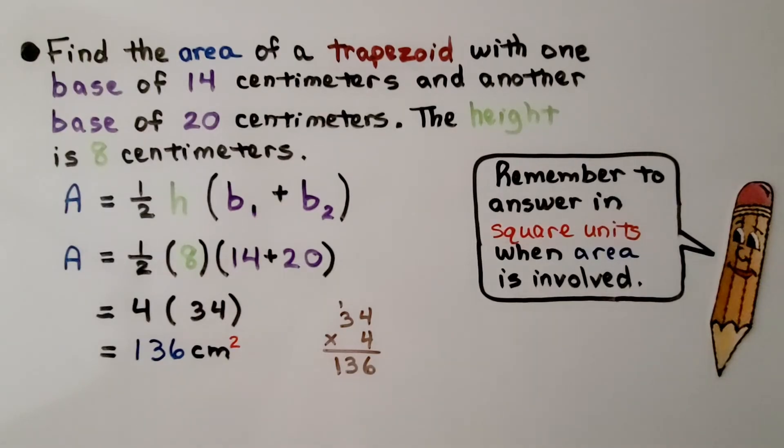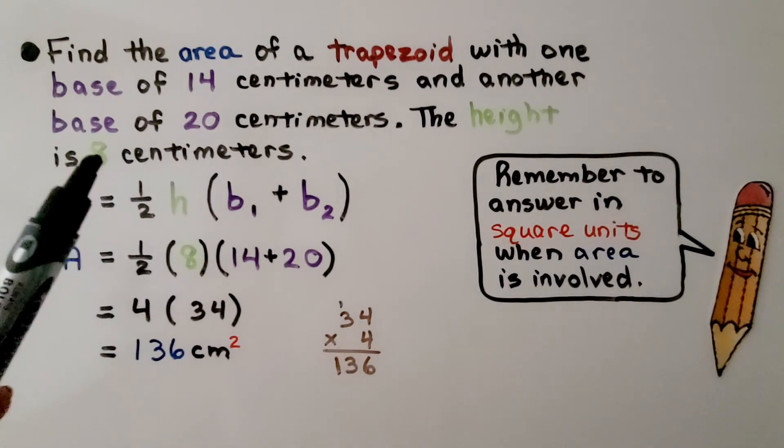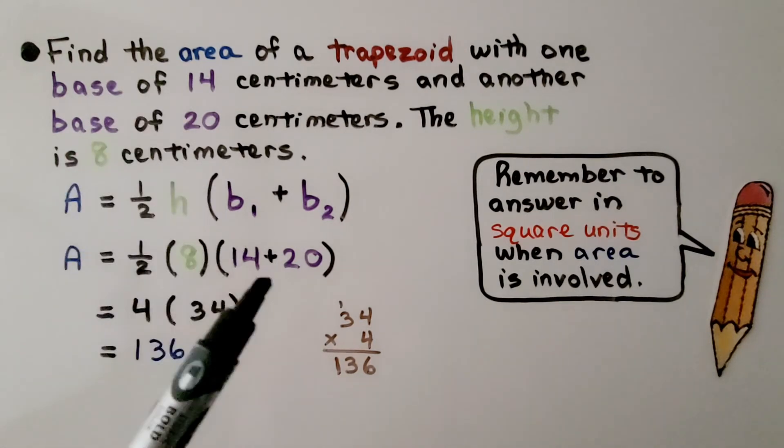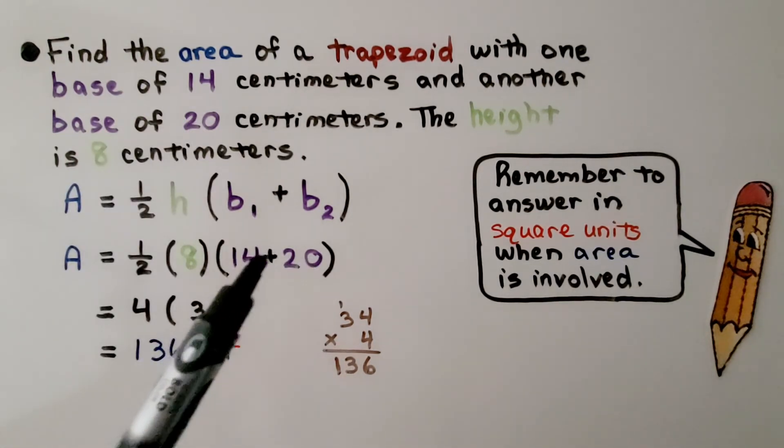Let's try it without a diagram. Find the area of a trapezoid with one base of 14 centimeters and another base of 20 centimeters. The height is 8 centimeters. We know that the height is 8, so we put that here. We know one base is 14, and the other one is 20, so we put them here.